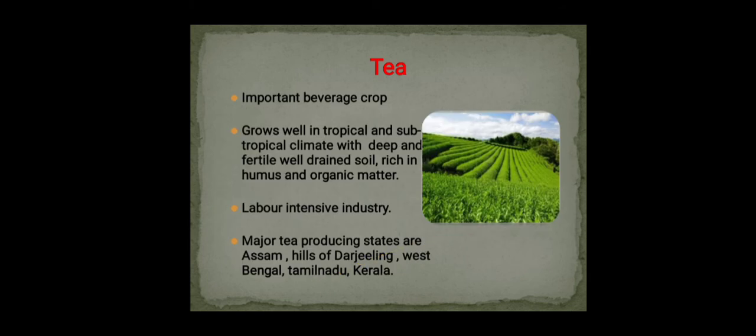Tea is a beverage crop that grows well in tropical and subtropical climates with deep, fertile, well-drained soil rich in humus and organic matter. It is a labor-intensive industry because labors are required for plucking the tea leaves at harvest time. Major tea-producing states are Assam, the hills of Darjeeling, West Bengal, Tamil Nadu, and Kerala.